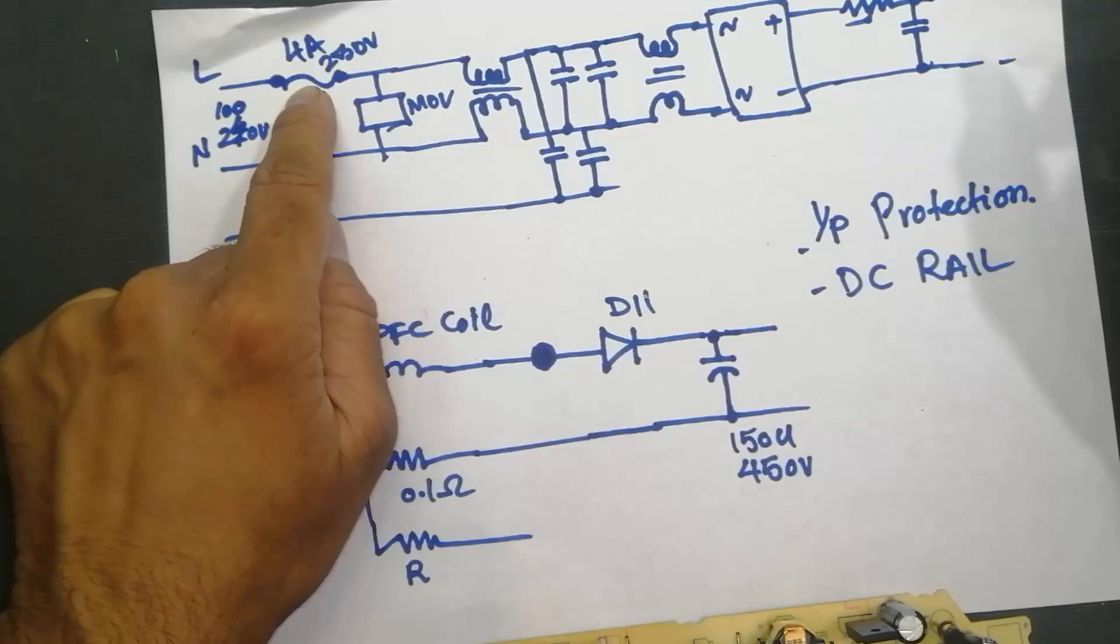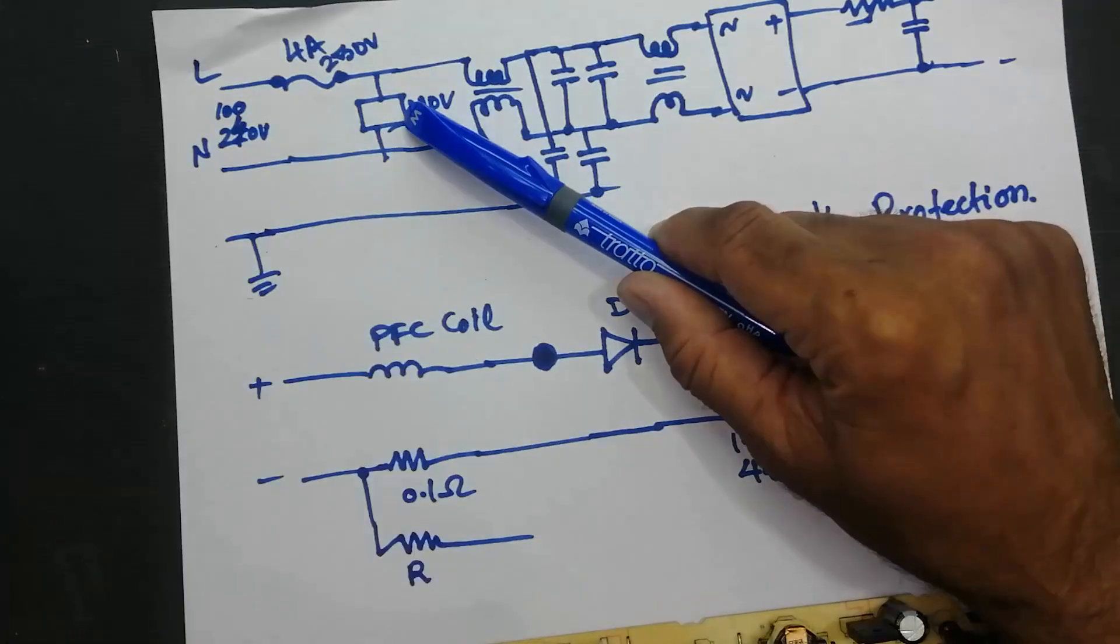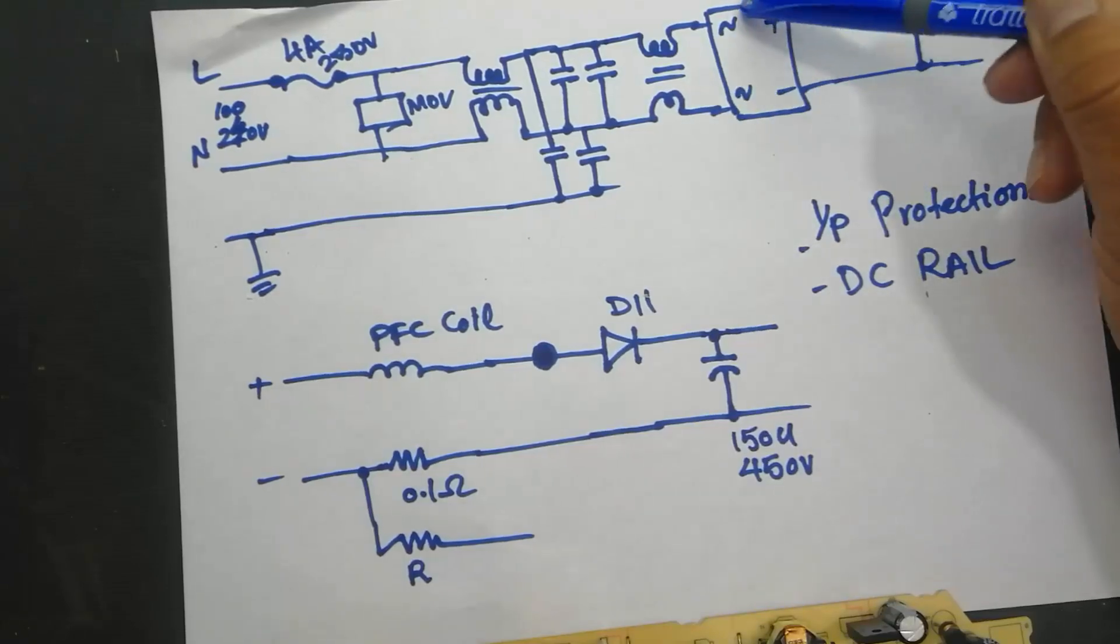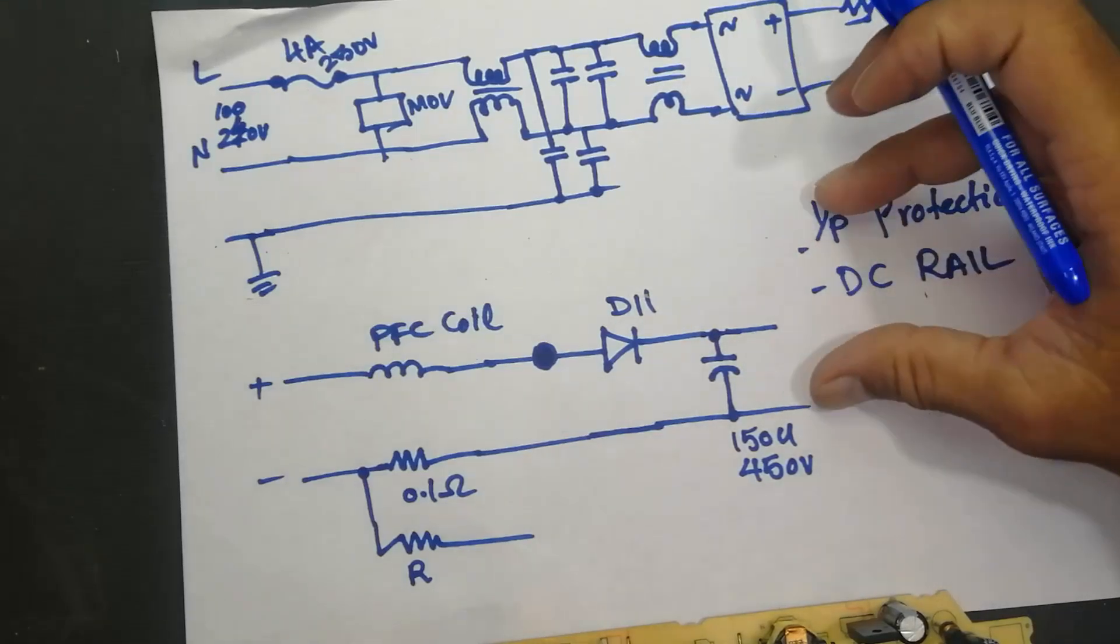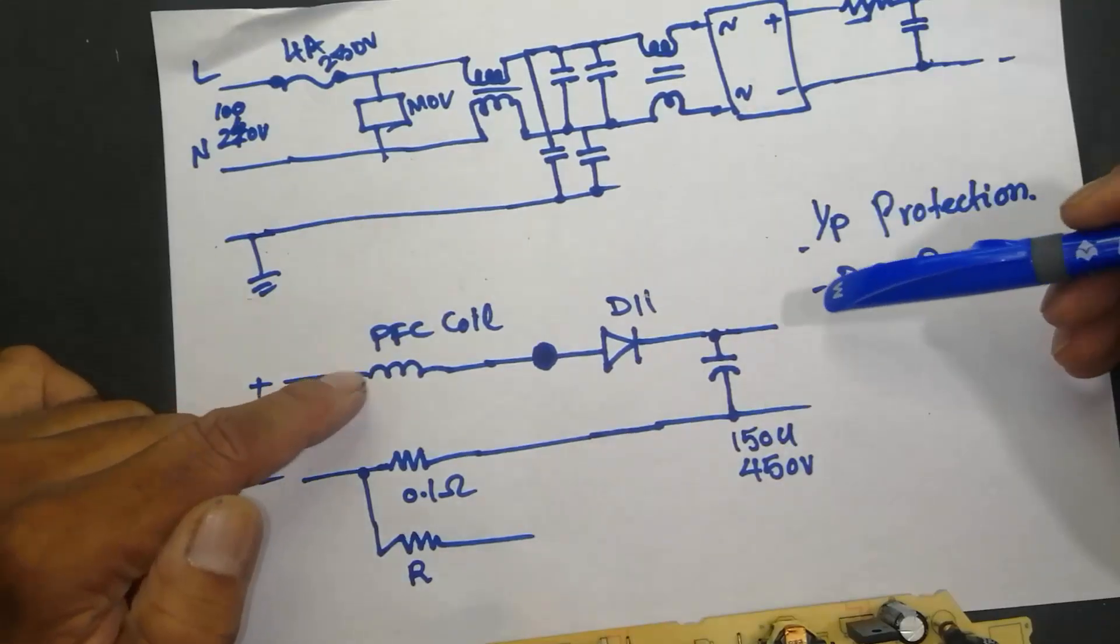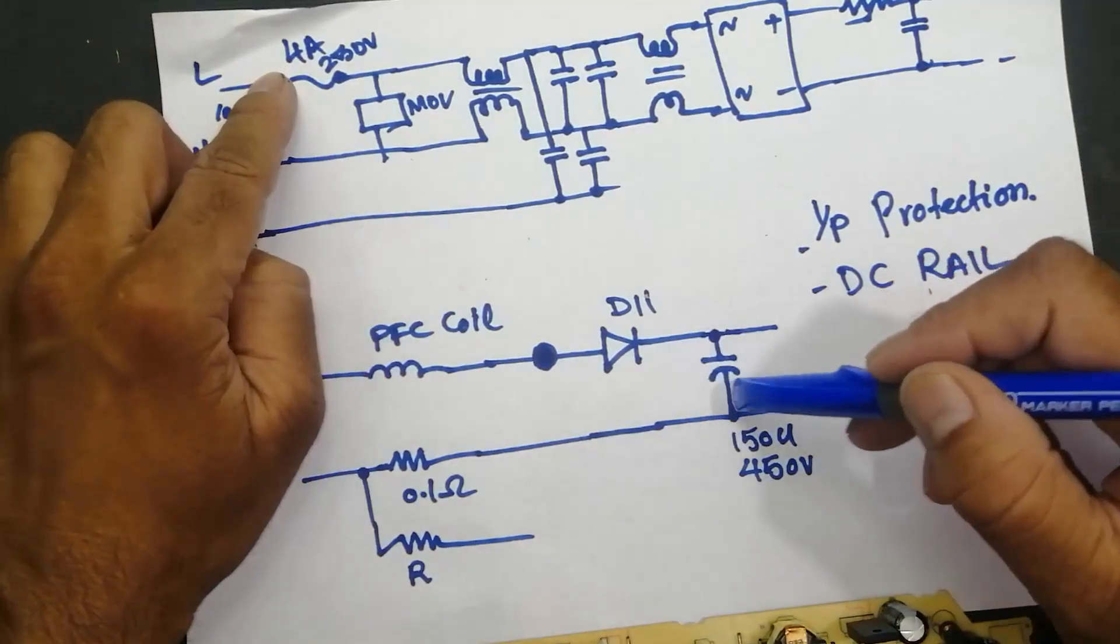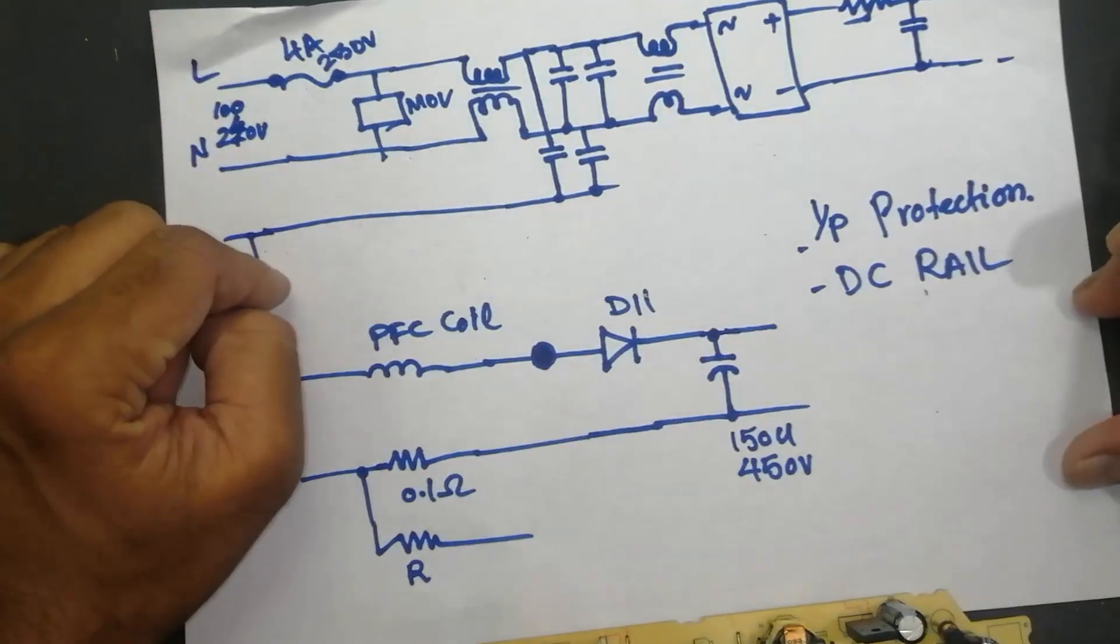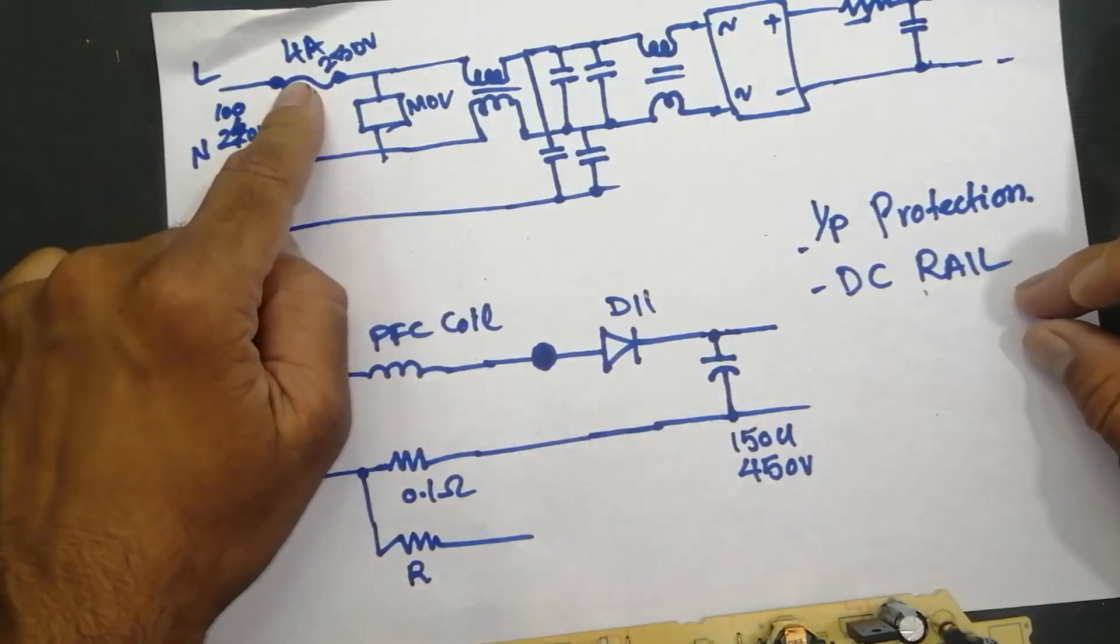Now the possible faults in this circuit might be this fuse is open due to this component failure. Fuse will burn out. Bridge rectifier failure, fuse will burn out. Or any next circuit failure, because this circuit is very perfectly designed. Might be our PFC circuit is short, fuse will burn out. This capacitor is bad, fuse will burn out. Our next any circuit power circuit will burn out, will make short circuit, this will burn out.